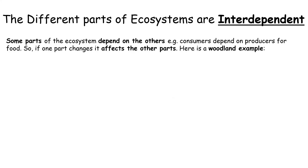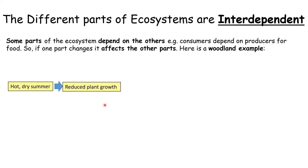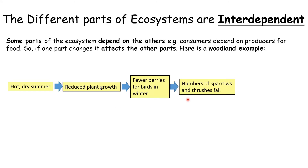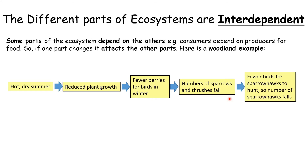The different parts of ecosystems are interdependent — that just means they rely on each other, they depend on each other. So weather affects an ecosystem: if we have a hot dry summer it could mean the plants don't grow so well, which would mean there are fewer berries on the plants, which would mean that birds might starve and have to fly off elsewhere to find food, which then would mean you'd have fewer sparrowhawks as consumers. So every single part depends on each other — that's what interdependent means.